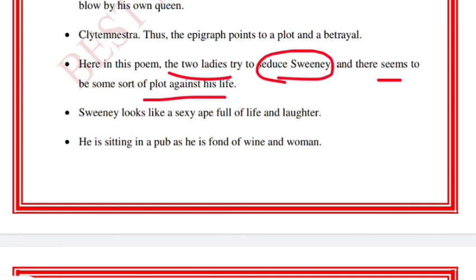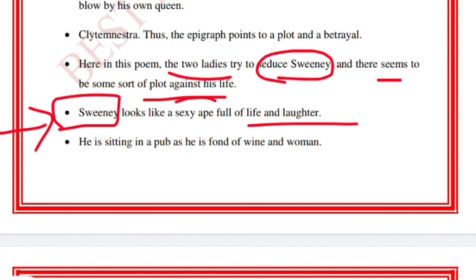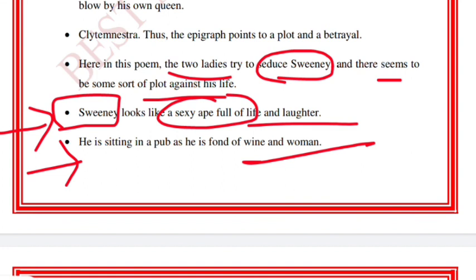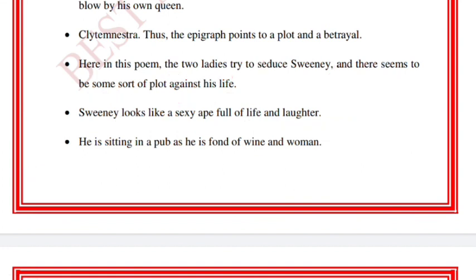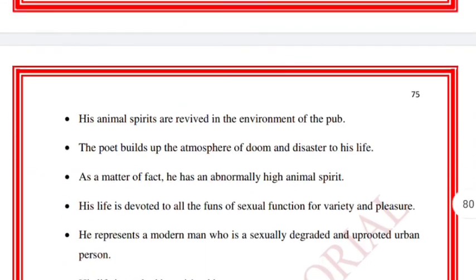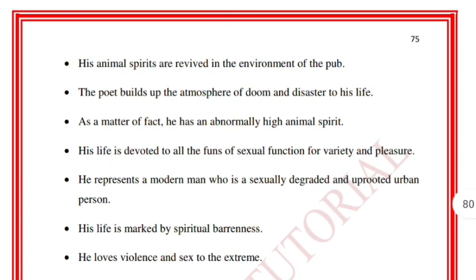Sweeney looks like an ape, full of life and laughter. He is sitting in a pub as he is fond of wine and women. His animal spirits are revived in the environment of the pub, and the poem builds up an atmosphere of doom and disaster around his life.